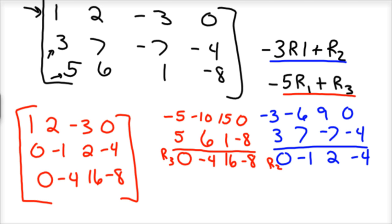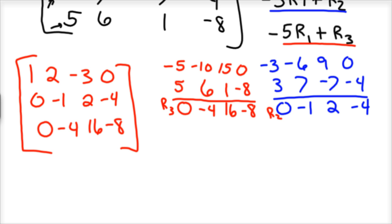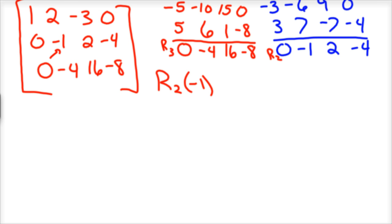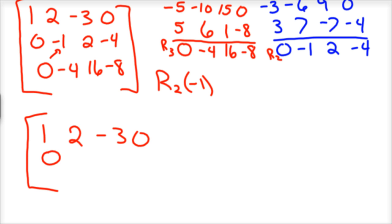That's nice because I've got the coefficient I need — it's just negative. So I'm going to take row 2 times negative 1 to get a new row 2. So: 1, 2, negative 3, 0; and if I multiply negative 1 times row 2 I'd have 0, 1, negative 2, positive 4; and then 0, negative 4, 16, negative 8.